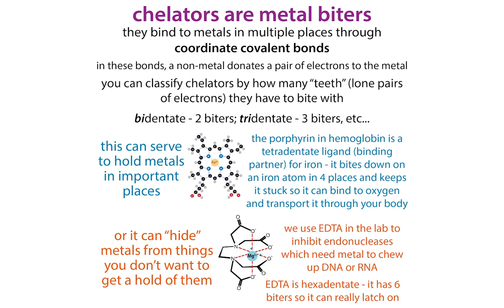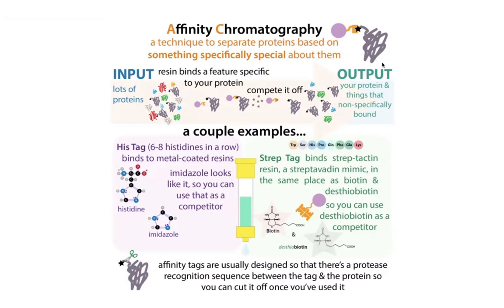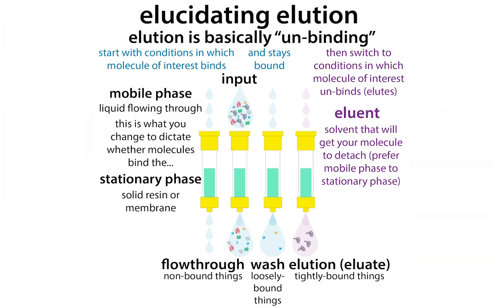This is a form of affinity chromatography. There are other forms, such as strep tags and various forms like that. We use the term elution when we talk about pushing the protein off — when the protein comes off the column, that will be our elution. Whereas the stuff that comes through before you do washes is called your flow-through, and when you're doing the washes that's called just the wash. Then when your protein comes off, that's your elution.